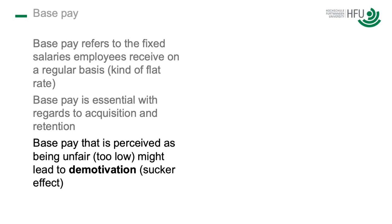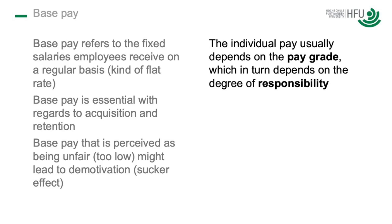When we look at base pay — and I don't want to go too deep into the fundamentals here, as this is a master course — I can refer to two videos I posted years ago on YouTube about compensation and benefits, where I outlined all the fundamental ideas around base pay and variable pay. Something relevant here is to understand that individual pay usually depends on the so-called pay grade. People belong to different pay grades, and the higher the pay grade, the higher is the base pay. The level of pay grade goes along with the degree of responsibility — the more responsibility you have in your job, the higher is your pay grade.